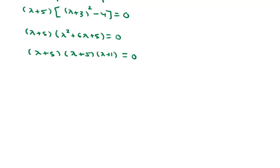So, set each factor equal to 0 to solve for lambda. One eigenvalue is negative 5. Another eigenvalue is negative 5. And our final eigenvalue is negative 1.